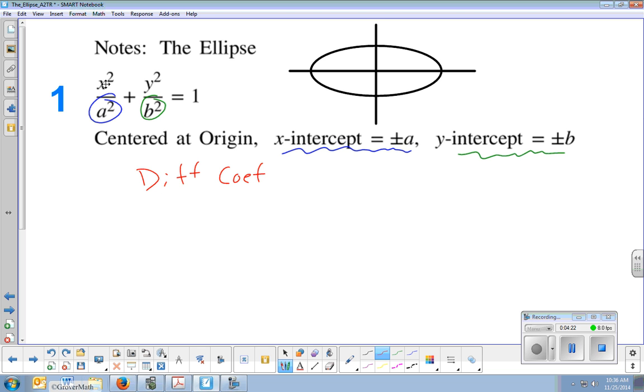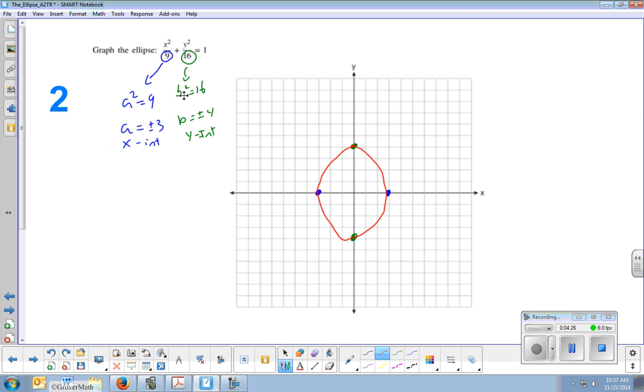Because if they were the same, like say this was x squared over 9 and y squared over 9, then the x-intercepts would be plus or minus 3, and the y-intercepts would also be plus or minus 3. And if they're the same, then that's a circle. So if these numbers are the same, it's a circle. But different is what makes it the ellipse.